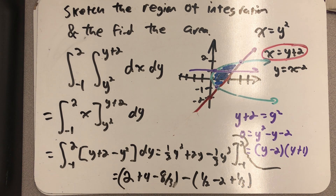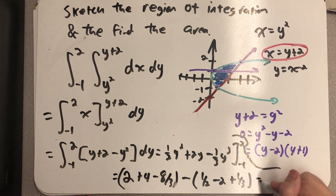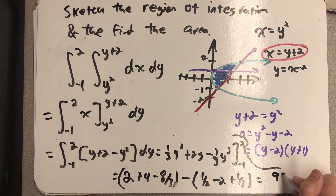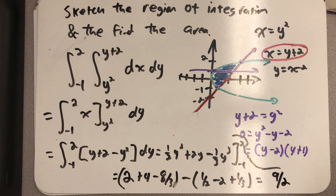And you get 4 and a half, which I would prefer to write as 9 over 2. And there's our area.